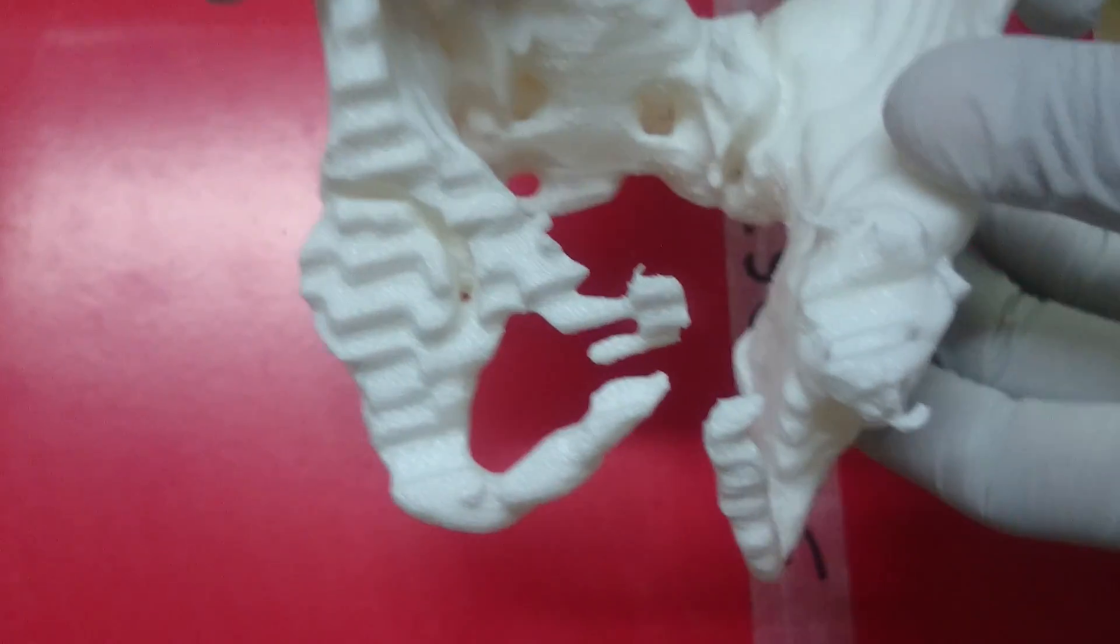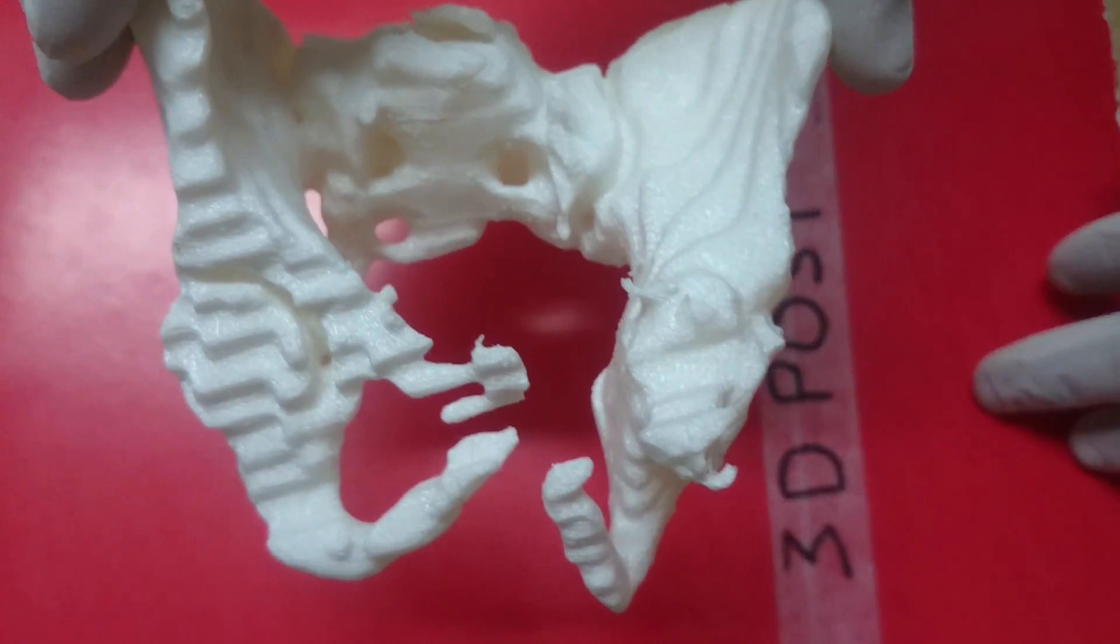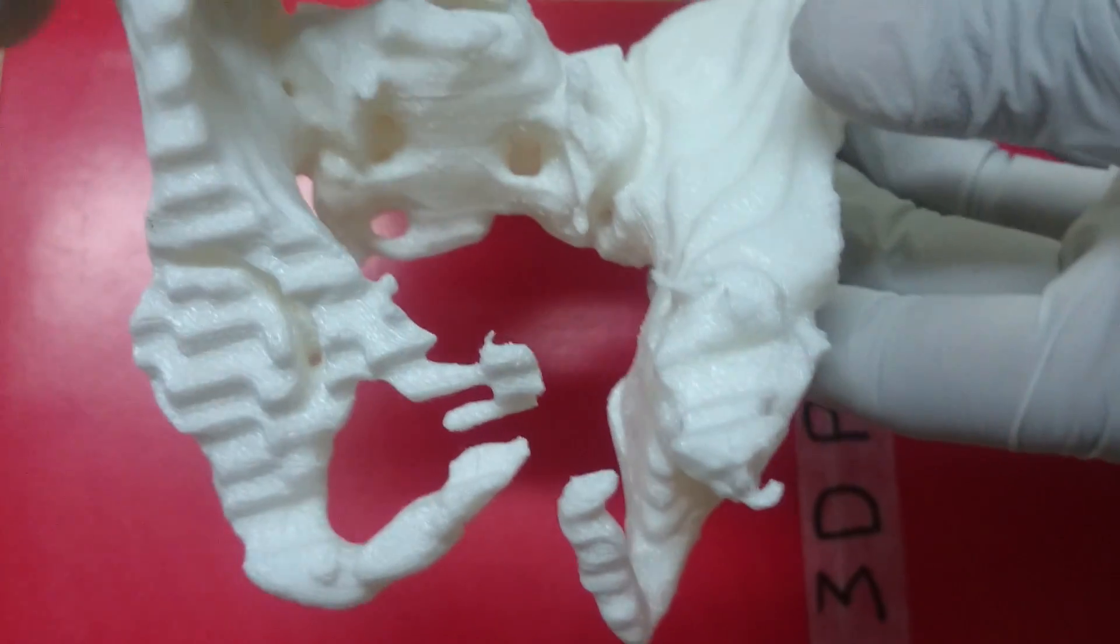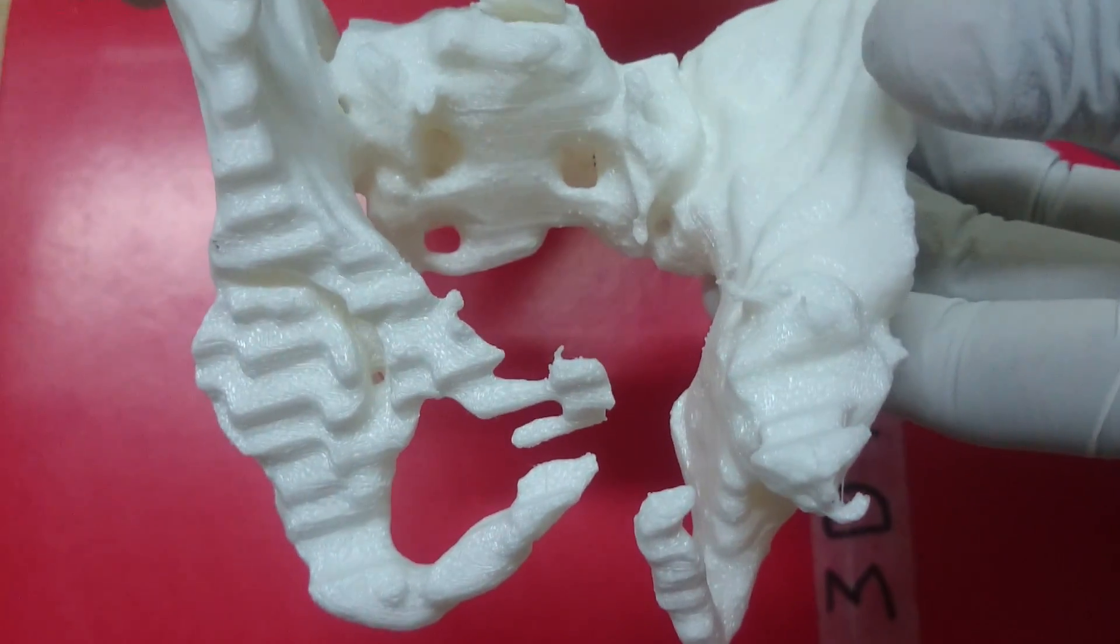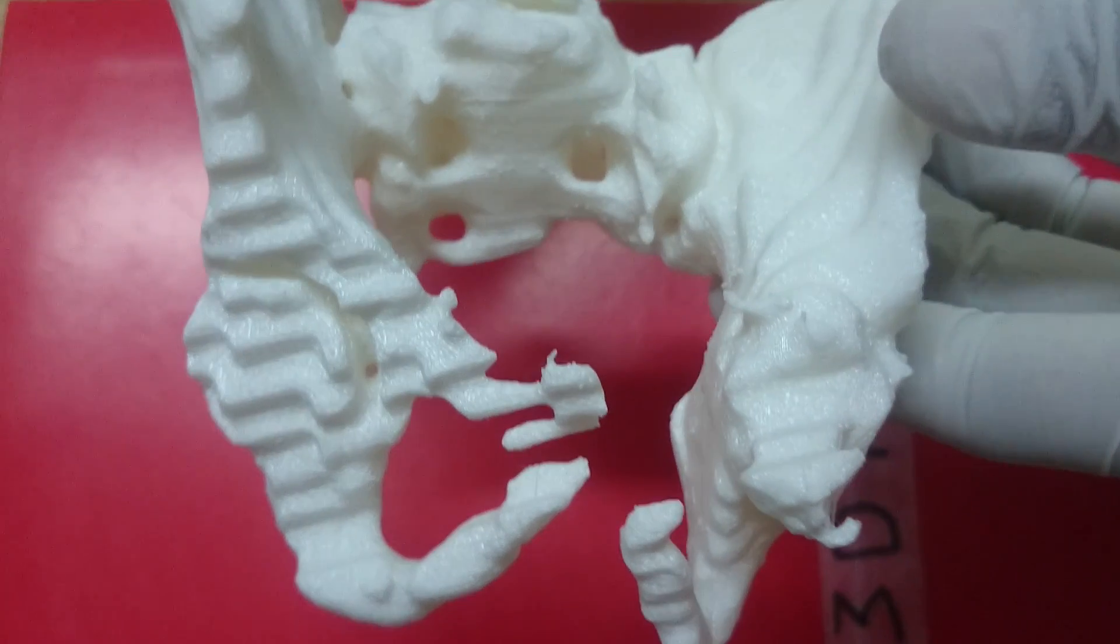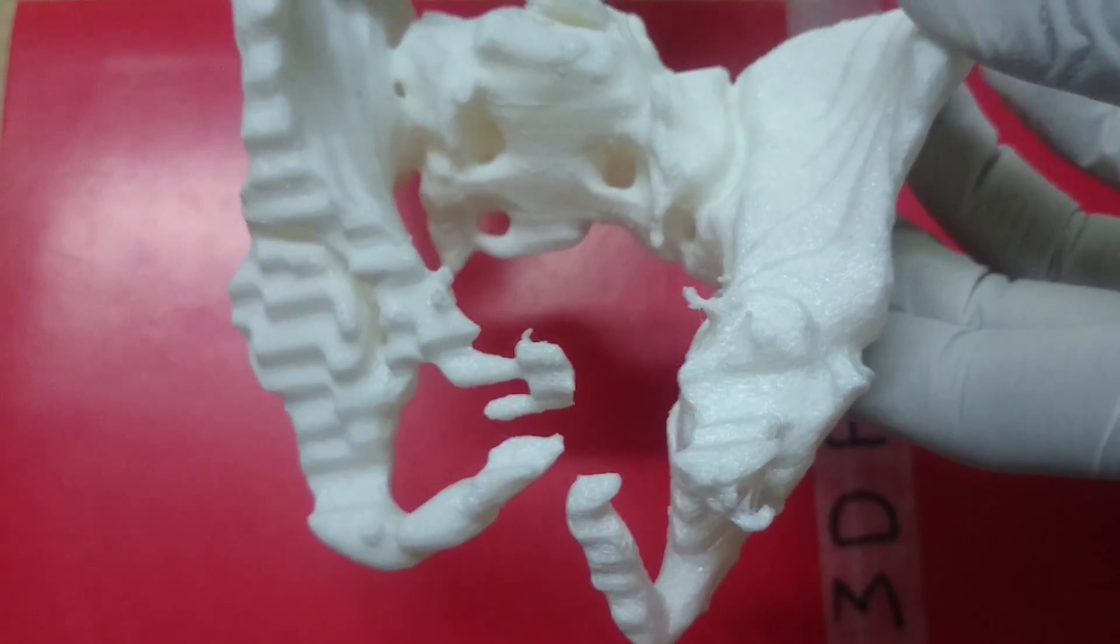This is a 3D model of a 17-year-old boy who had a road traffic accident. This model has been created from the CT images, the DICOM images of the CT scan of the pelvis of this boy.